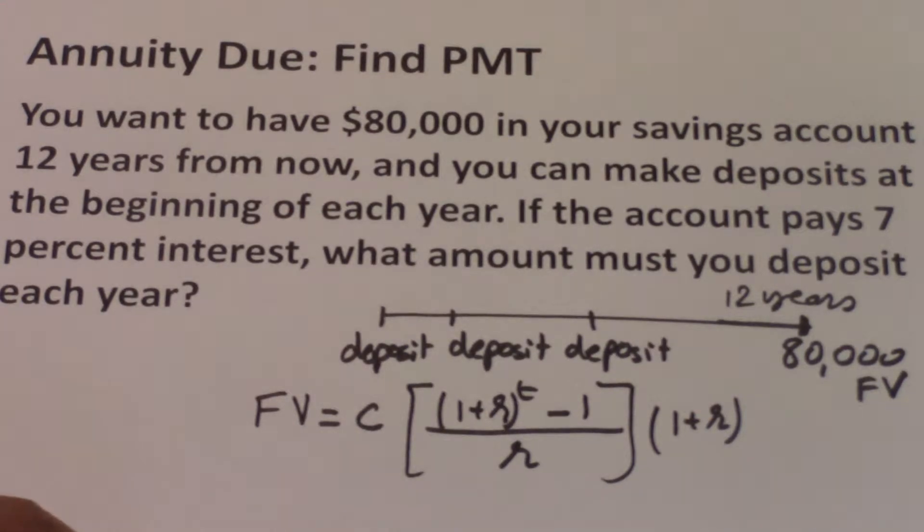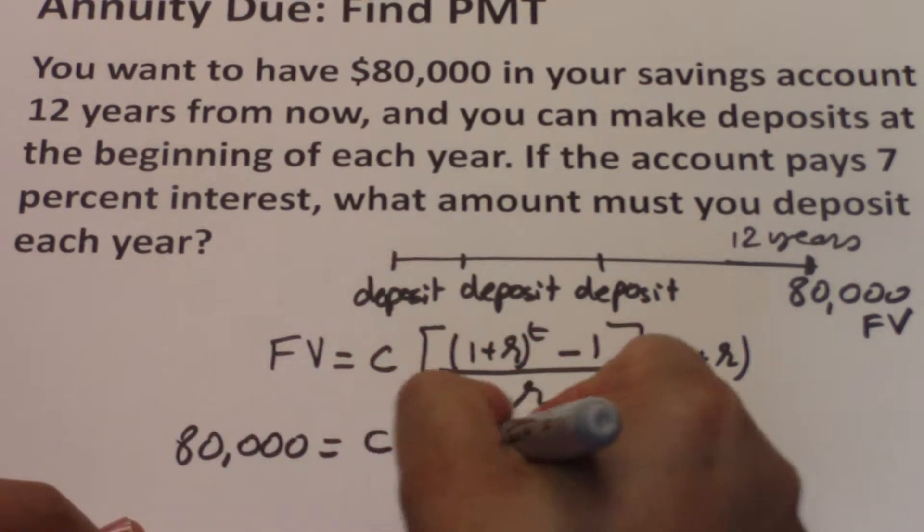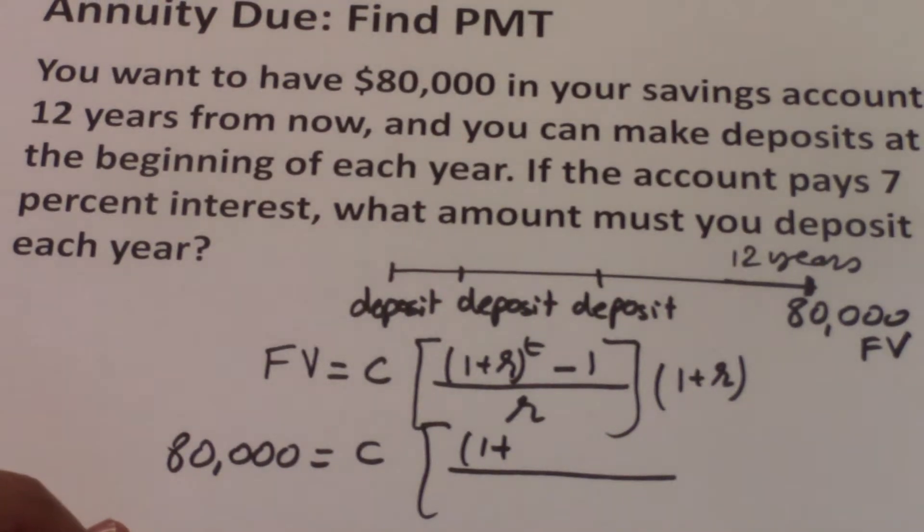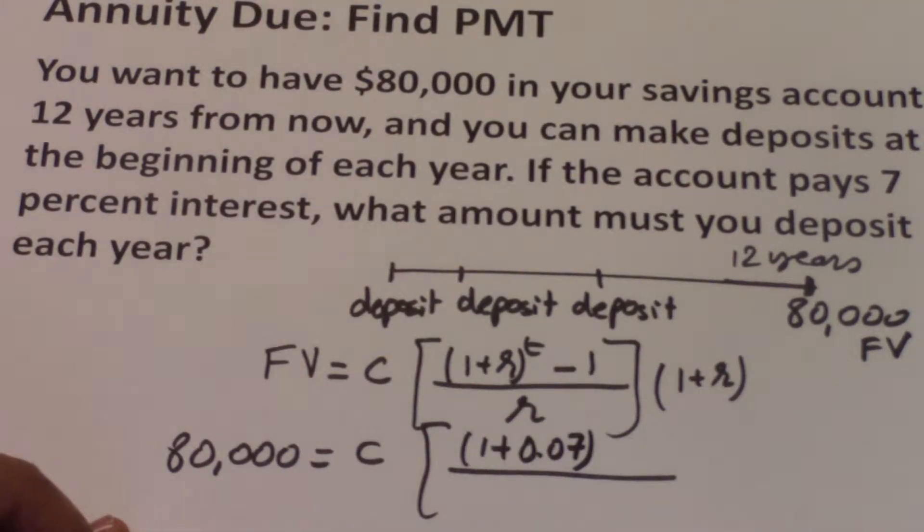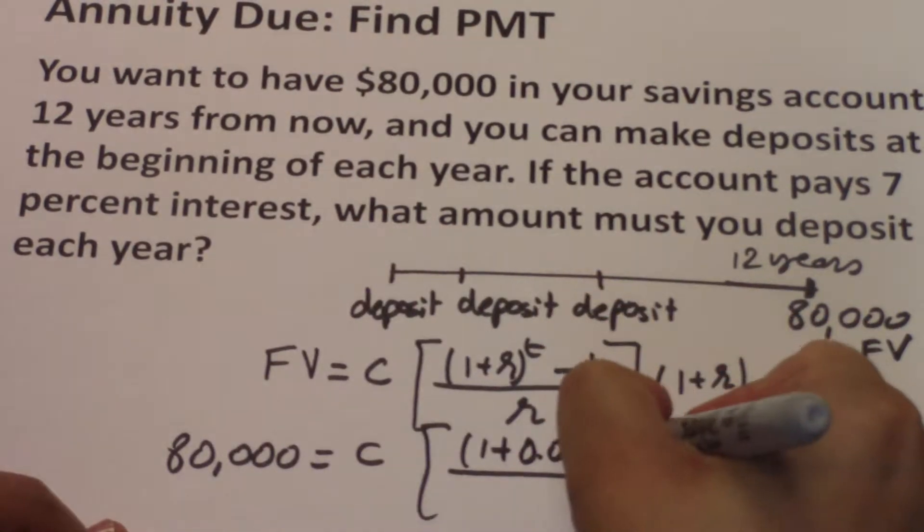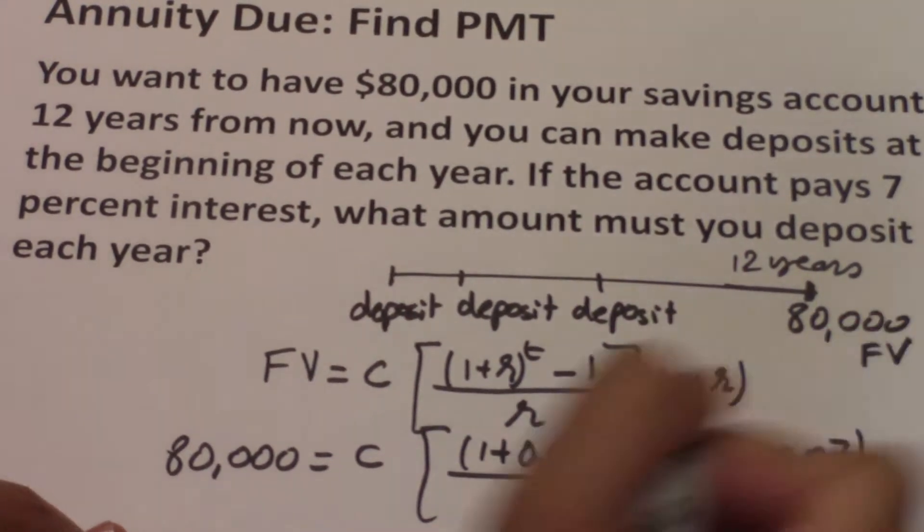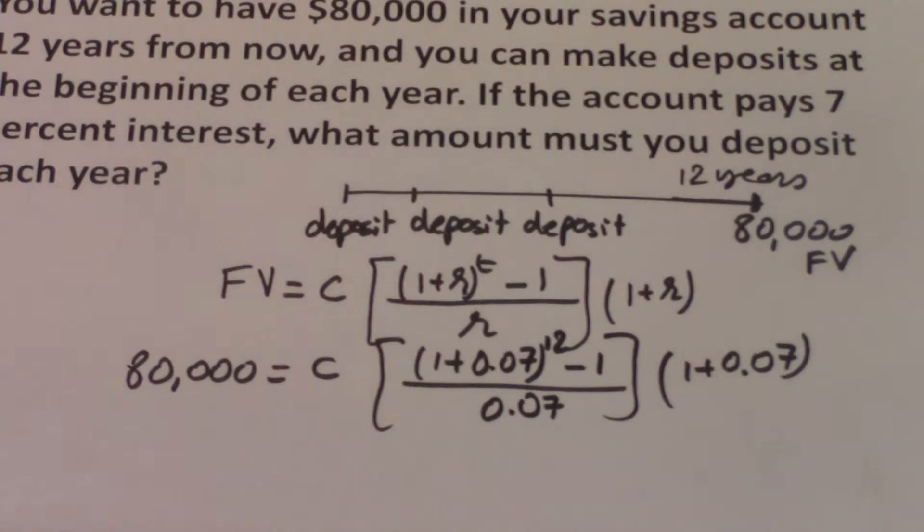C is the annual deposit, so R and T should also be annual. The future value here is $80,000, which equals C times (1 plus 0.07) to the power 12 minus 1 over 0.07 times (1 plus 0.07). So here we have all of our values. The best thing to do is to calculate this side of the equation and then rearrange to find C.